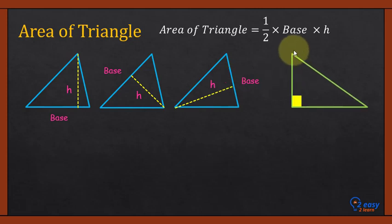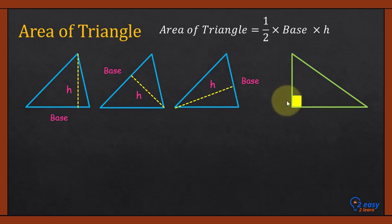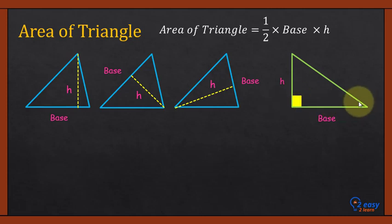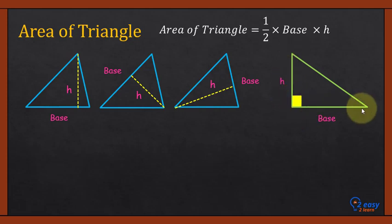If the triangle is a right angle triangle, the horizontal line and the vertical line are already perpendicular to each other. So we can select one side as a base and the other side as the height. If I select the horizontal line as the base, then the vertical line will be the height, and vice versa. Keep in mind: when you have a right angle triangle, the legs of the right angle are used as the base and height.